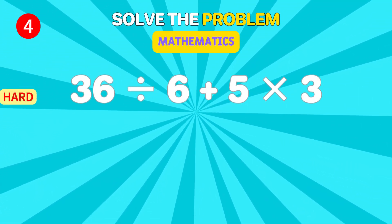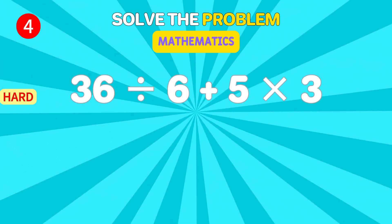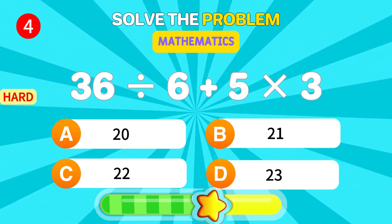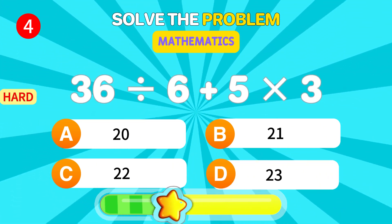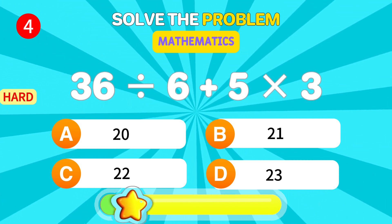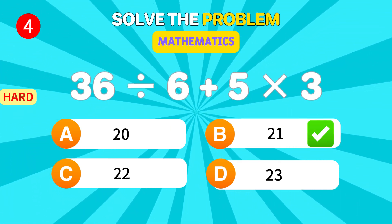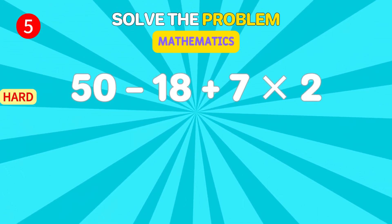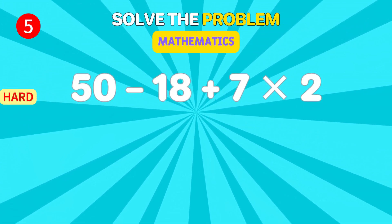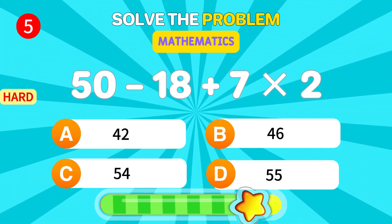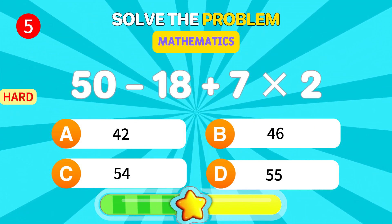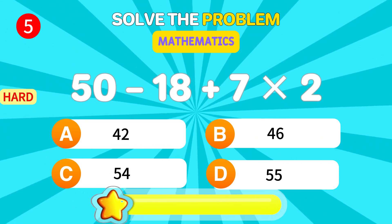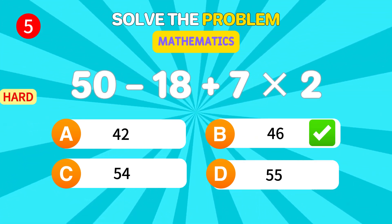Solve this. 36 divided by 6 times 3. 21. Excellent. What is 50 minus 18 plus 7 times 2? 46. You're crushing it.